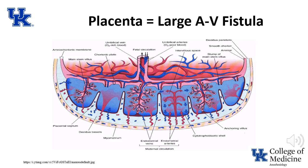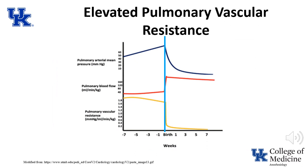Most of the aspects that make the fetal circulation unique can be attributed to two phenomena. First, the placenta is a large arteriovenous fistula. This results in a very low systemic vascular resistance. Since blood flow through the ductus arteriosus is largely dependent on pressure differences, the low SVR results in a low aortic pressure, and blood flows right to left from the pulmonary artery into the aorta. The second phenomenon is that the pulmonary vascular resistance is elevated. This further increases the pressure differential, favoring blood flow from the pulmonary artery into the aorta via the ductus arteriosus.